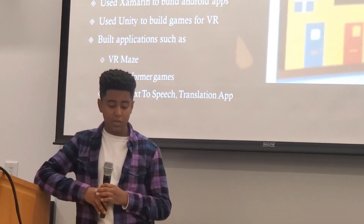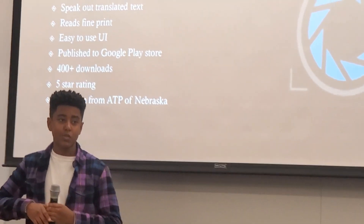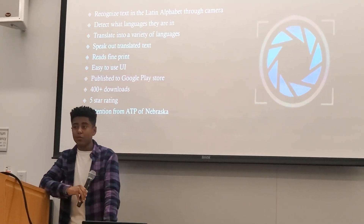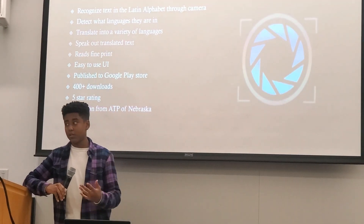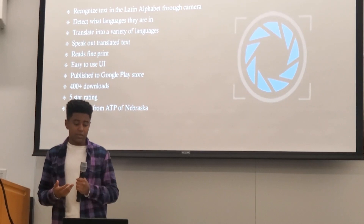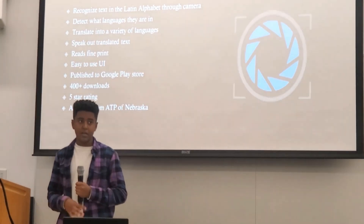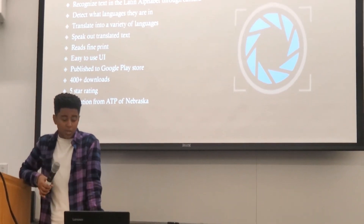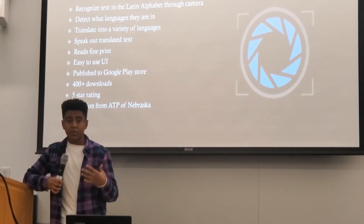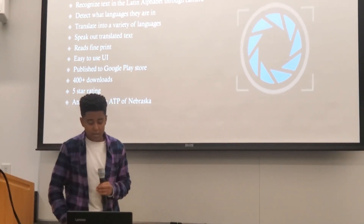The app I published was an OCR text-to-speech and translation app. It's called PigSpeak — short for Picture Speak — because that's what it does. It recognizes text in the Latin alphabet through a camera, detects what language it is, translates that text into a variety of languages of your choice, and then speaks out the text. It can read fine print and has an easy-to-use interface. I published it to the Google Play Store in 2017, and since then I've received 400-plus downloads and a five-star rating. I also got attention from ATP — Assistive Technology Partnership — a government office in Nebraska that finds technology for people with disabilities.